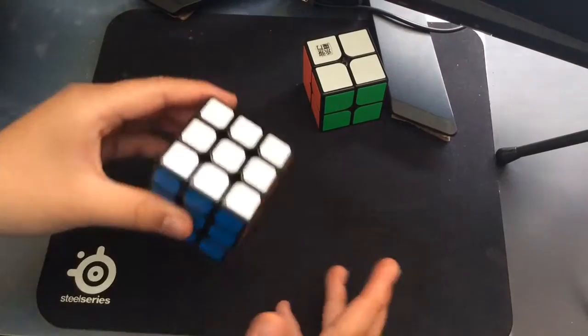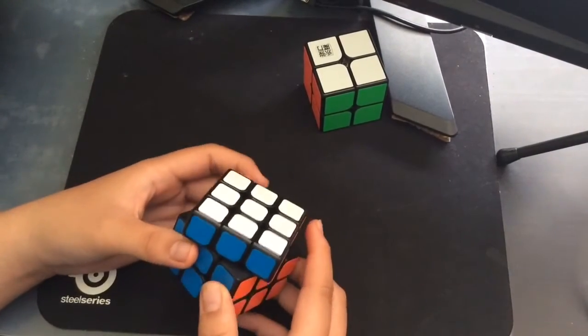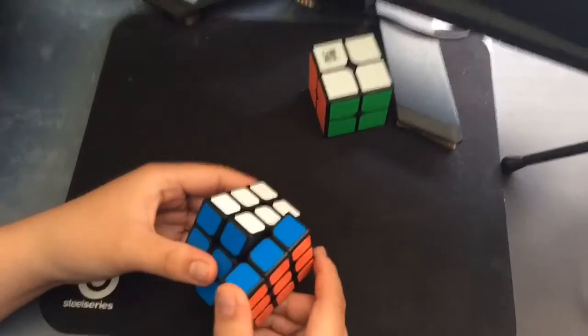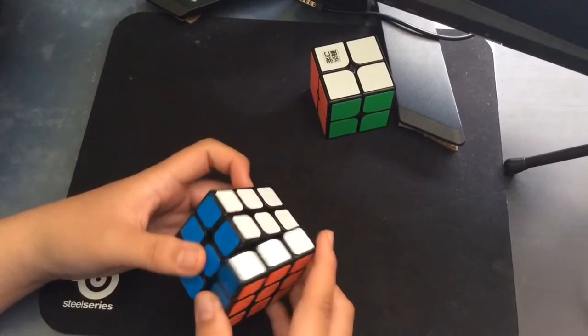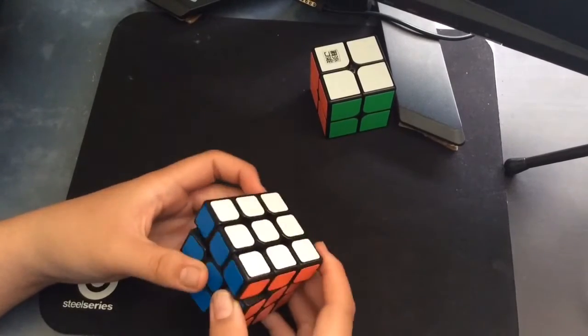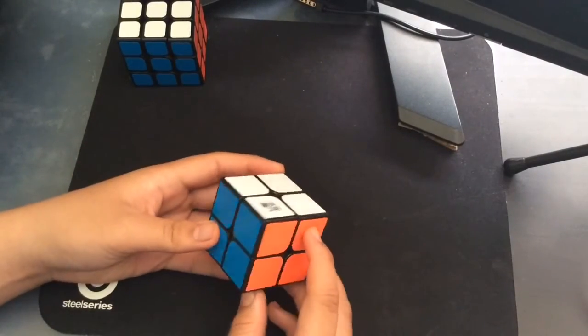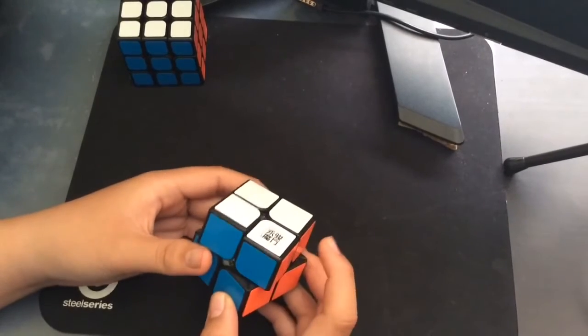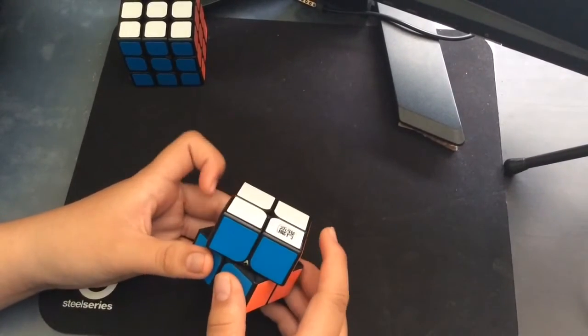And for my goals, for 3x3, I want almost the same as Aaron: all under 30, and I'm hoping for one sub-20 even though I'm probably not going to. And for 2x2, I specialize in 2x2, so I hope for like a sub-5 and a sub-7 average.